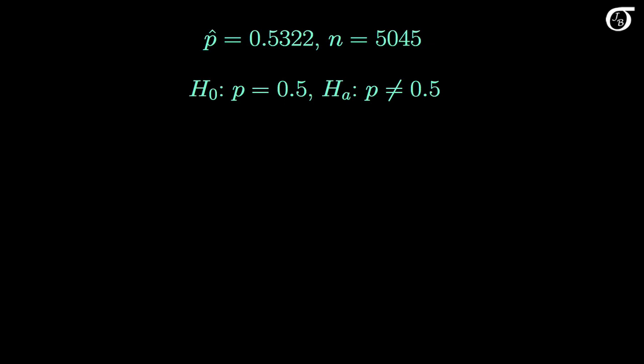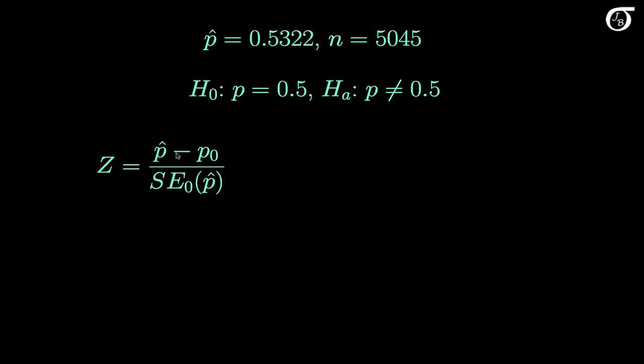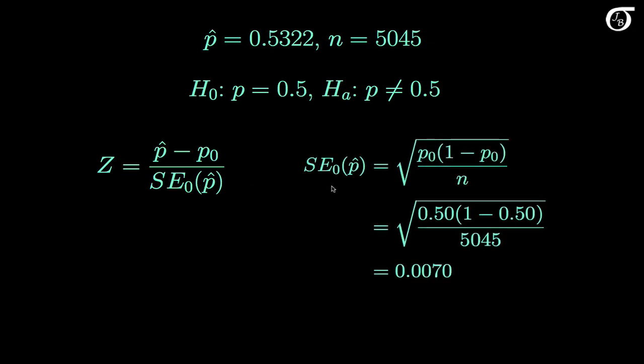The sample size is very large here, so methods based on the normal approximation are very reasonable. The Z statistic is equal to the sample proportion minus the hypothesized value, over the standard error of the sample proportion, where the standard error is equal to the square root of p0 times 1 minus p0 over n. In inference for proportions, the standard error for hypothesis tests differs from the standard error for confidence intervals. For confidence intervals we use the sample proportion in the formula, and for hypothesis tests we use the hypothesized proportion. These two standard errors are often pretty close in value. Here the hypothesized value is 0.5, and the standard error works out to 0.0070, which to four decimal places is the same as the standard error for the confidence interval, but with more decimal places we'd see it's slightly different.